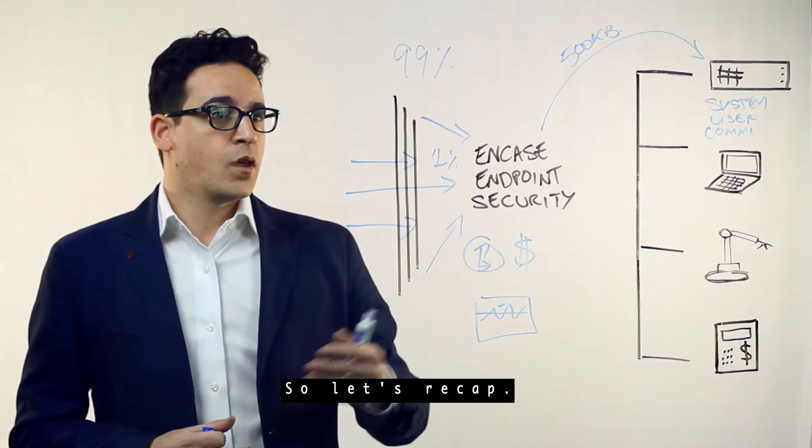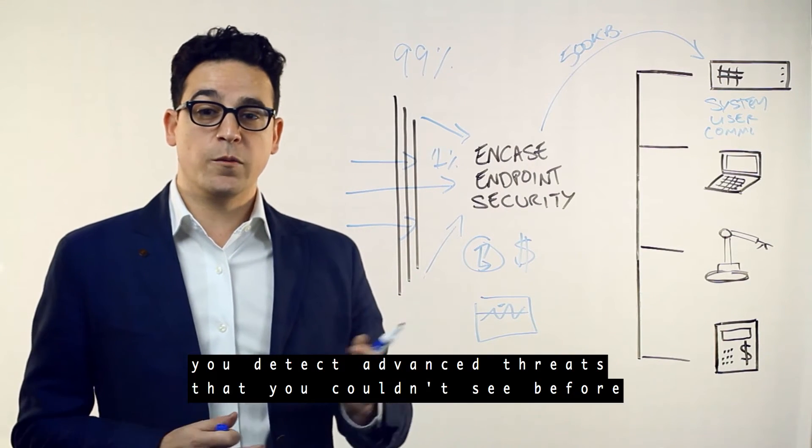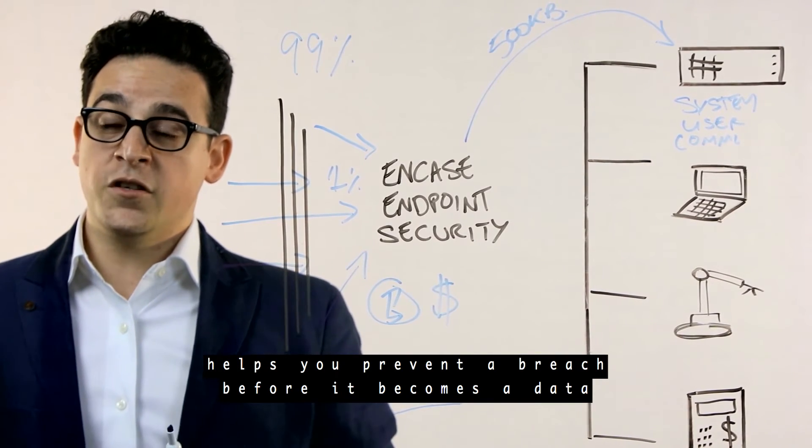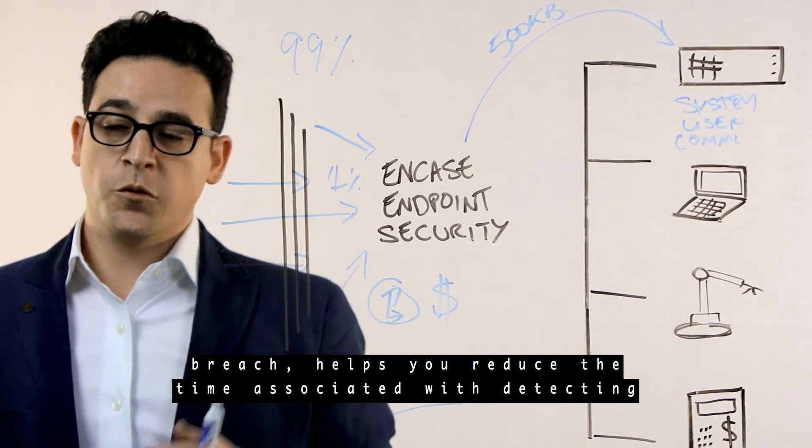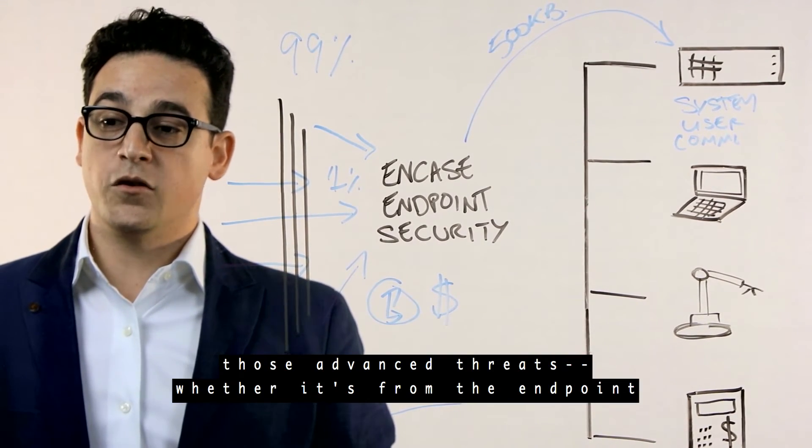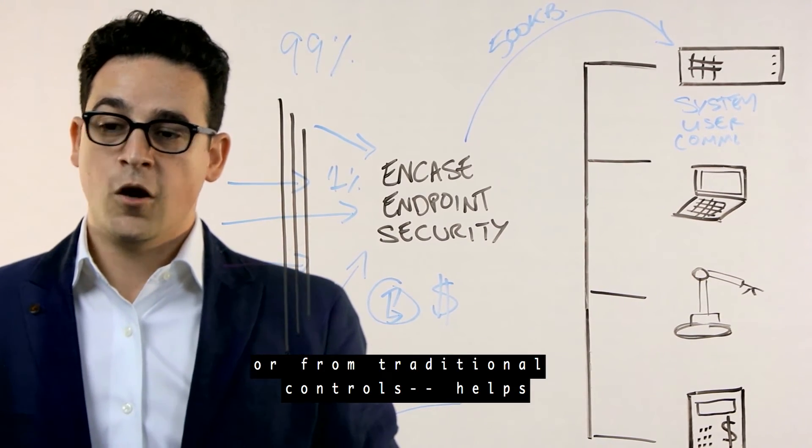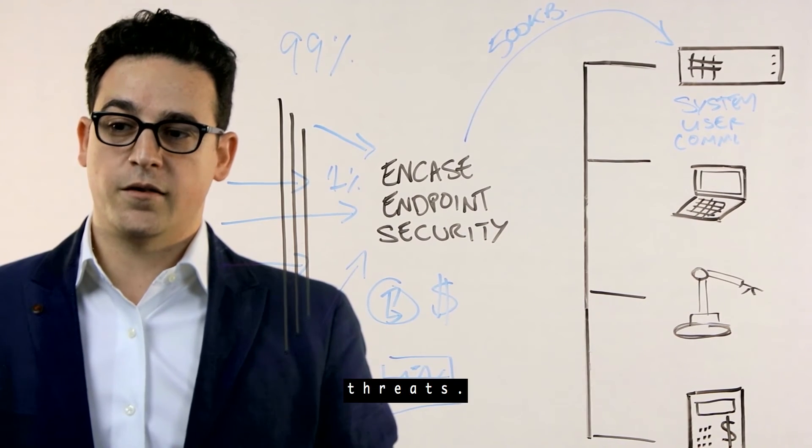Let's recap. NCASE endpoint security can help you detect advanced threats that you couldn't see before with traditional security controls. Helps you prevent a breach before it becomes a data breach. Helps you reduce the time associated with detecting those advanced threats, whether it's from the endpoint or from traditional controls. Helps you reduce cost and time in dealing with those individual threats.